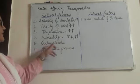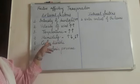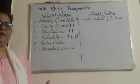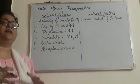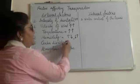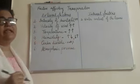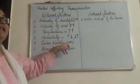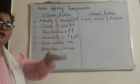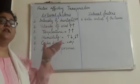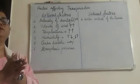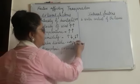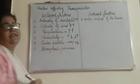Now let's come to the fifth factor: the amount of carbon dioxide. The concentration of carbon dioxide normally present in air is 0.03%. If the concentration of carbon dioxide increases beyond this level, it will lead to the closure of the stomata. If the stomata pores close, the transpiration will decrease. So with an increase in carbon dioxide, transpiration will decrease.